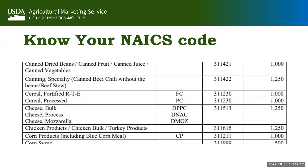On your screen is a NAICS code table that can be found on our master solicitation. All of the NAICS codes that commodity procurement uses have size standards based on the number of employees. On the far left column you'll find the description of the commodity, the second column from the right lists the NAICS code, and the far right column is the number of employees. For example, a canned vegetable vendor would use NAICS code 311421 and to be considered a small business the company should have 1,000 employees or less.